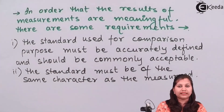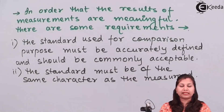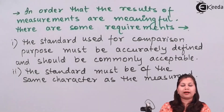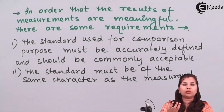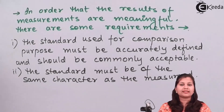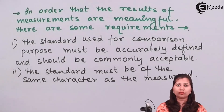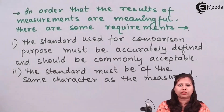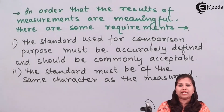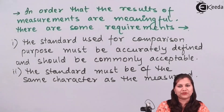In this video we studied what is measurement: how it tells about the property of something and gives a meaningful number to a physical parameter. We defined measurement in engineering as the result of a comparison between an unknown quantity and a known quantity, defined the terms measurand and standard, and studied the three requirements essential for getting a meaningful result of measurement.